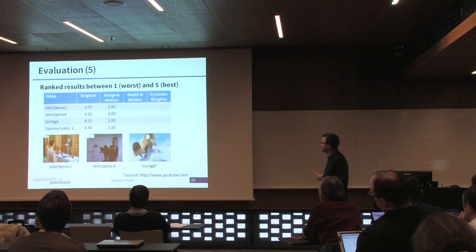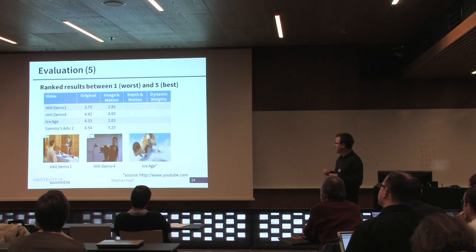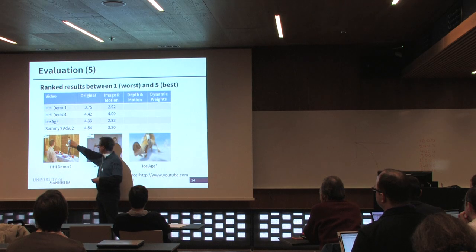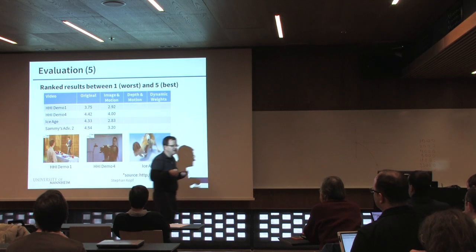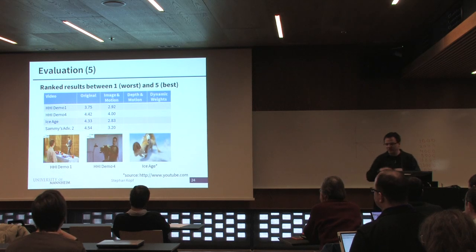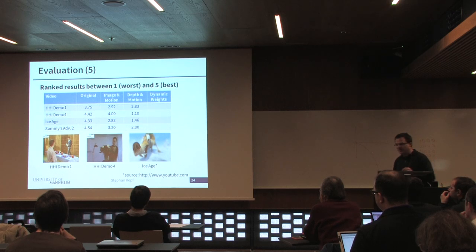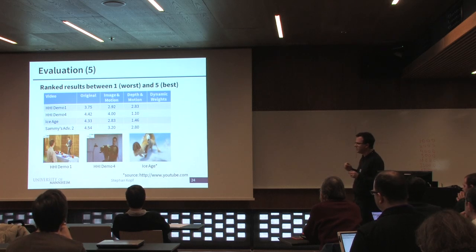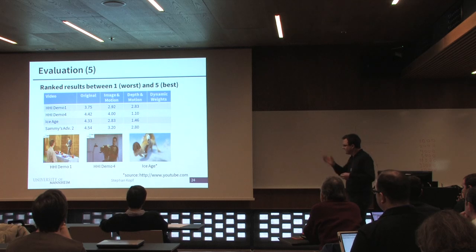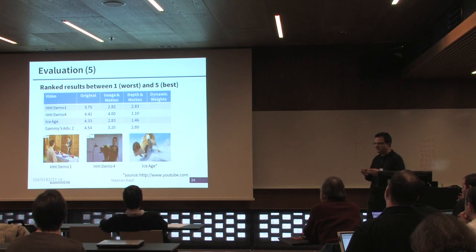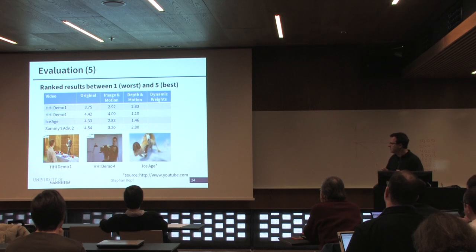If we only combine image and motion saliency maps — using a fixed factor of 0.3 for motion — we get average results. In the case of the first video, the color of the head and hair was very similar to the background color, so it was typically not selected as salient and was heavily blurred in some parts. If we only combine depth and motion, we had very bad results in two videos. For example, in the center image you see that the person is behind flowers, so it is not marked as salient. The general assumption that the object closest to the camera is the most important may not always be true.